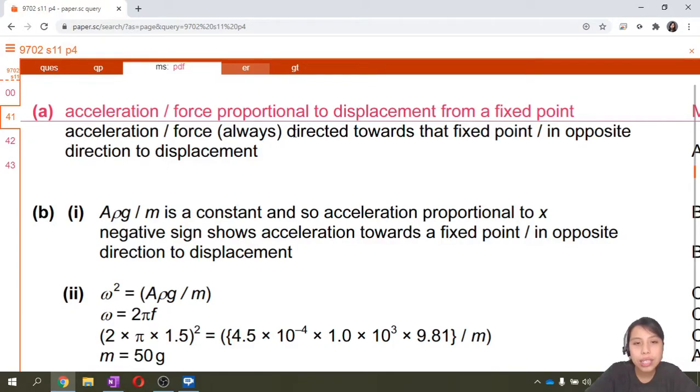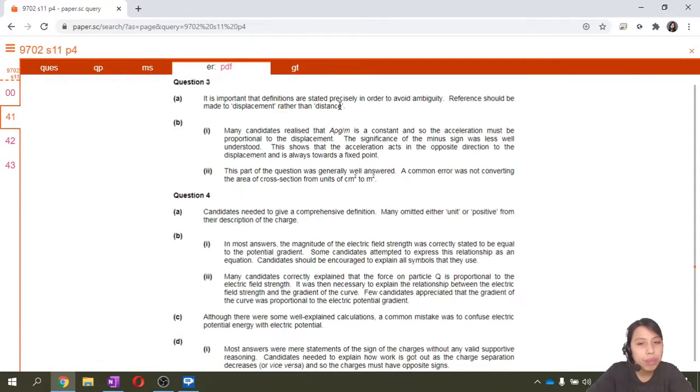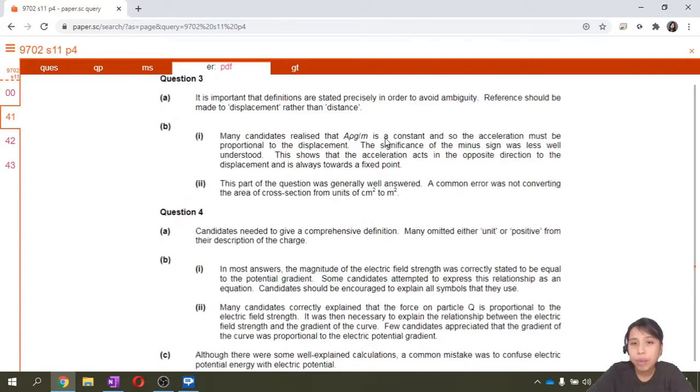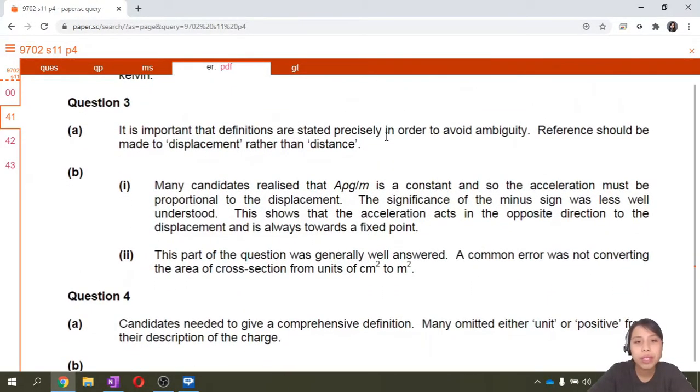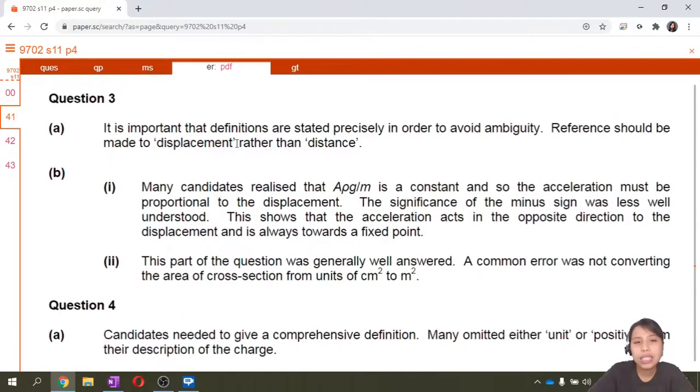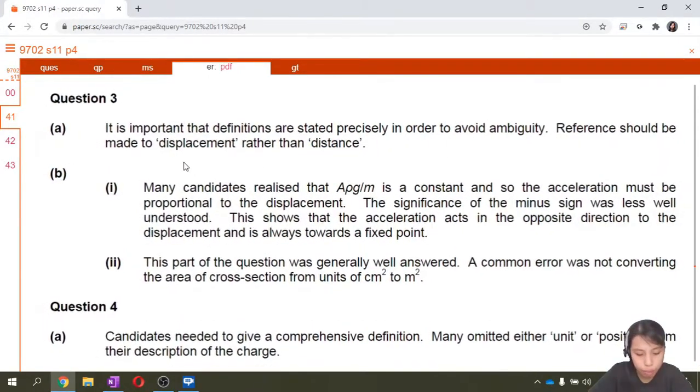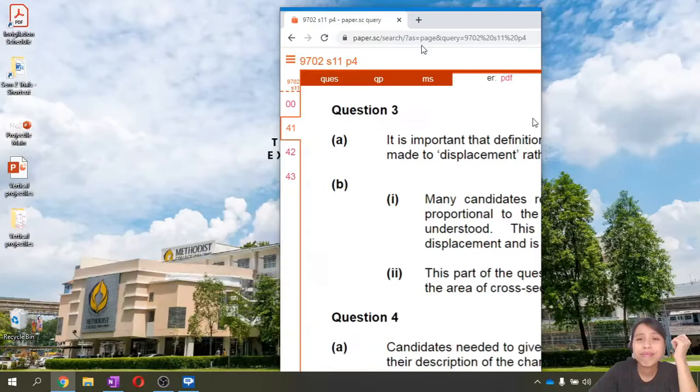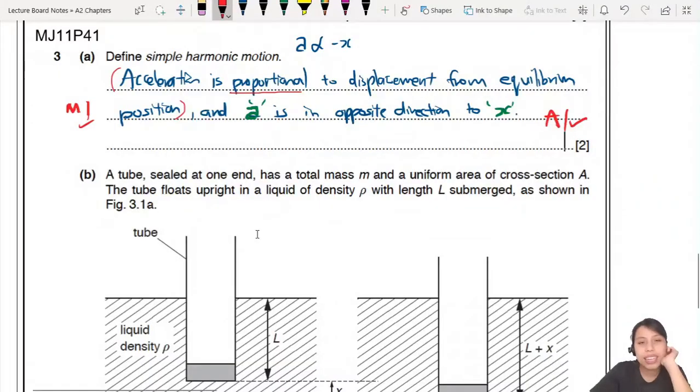You can, they can accept when you say acceleration is always directed towards the fixed point, means acceleration is always pointing towards equilibrium position. Or you can say, my favourite one, acceleration is opposite direction to displacement, talking about the negative sign. Both one also can. And as a warning, by the way, there's an ER in paper SC. Very conveniently, you can jump to it. It's the examiner report. It tells you what to be careful of. Basically, it's like hacks for every question. So go and read it if there is one. You see, it is important definition is state precisely. Problem is a lot of students will say distance instead of displacement. So you should use the word displacement. Don't say distance. You might lose marks there. That's the first hack.